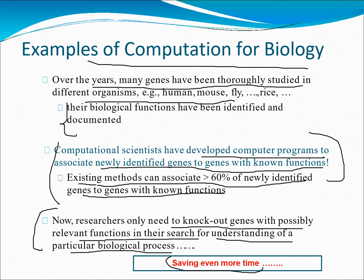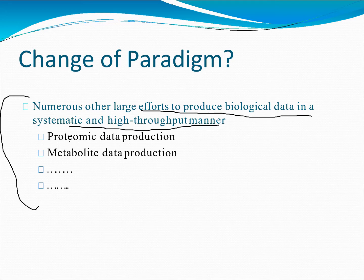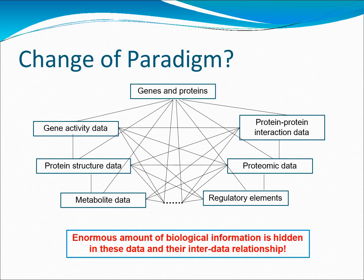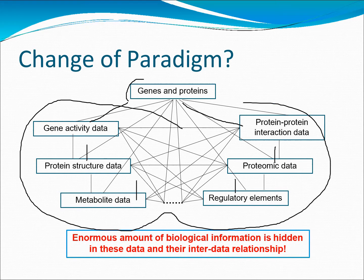This is definitely more time saving. Now let's talk about a change of paradigm. Numerous large efforts to produce biological data in a systematic and high-throughput manner include proteomic data production and metabolic data production. This covers gene activity data, protein-protein interaction, gene-protein data, protein structure data, proteomic data, metabolic data, and regulatory elements — all of which we can identify through bioinformatics using different tools.